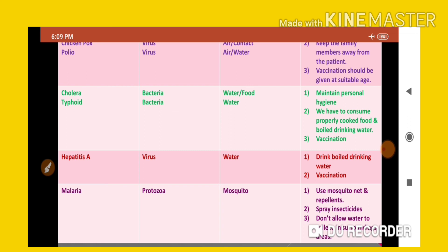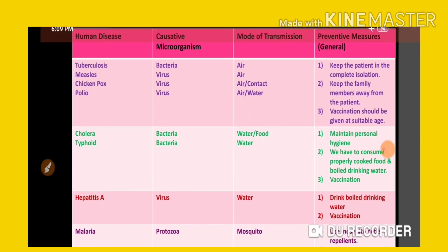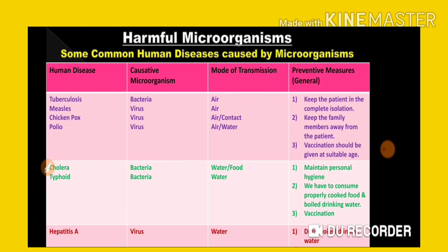Do not allow water to collect in surrounding areas — in drainages, tires, or anywhere near the house — because stagnant water is a breeding ground for mosquitoes to lay eggs and reproduce. Clean and remove any collected water regularly. These are the common diseases caused by microorganisms. Thank you for watching — please share and subscribe.